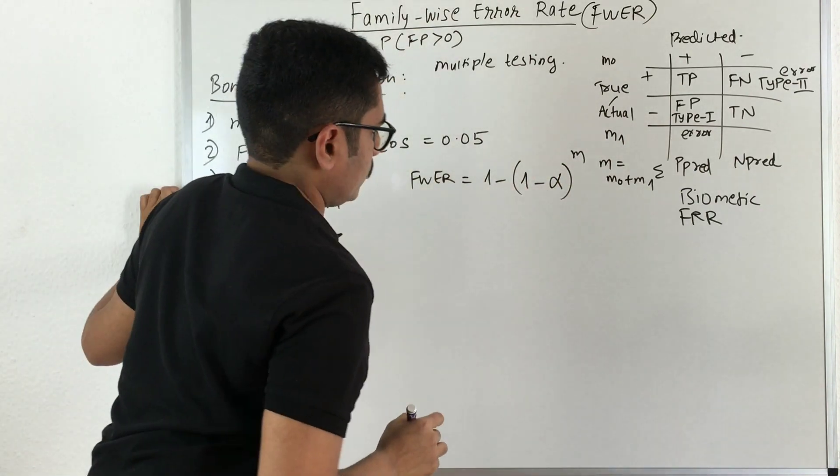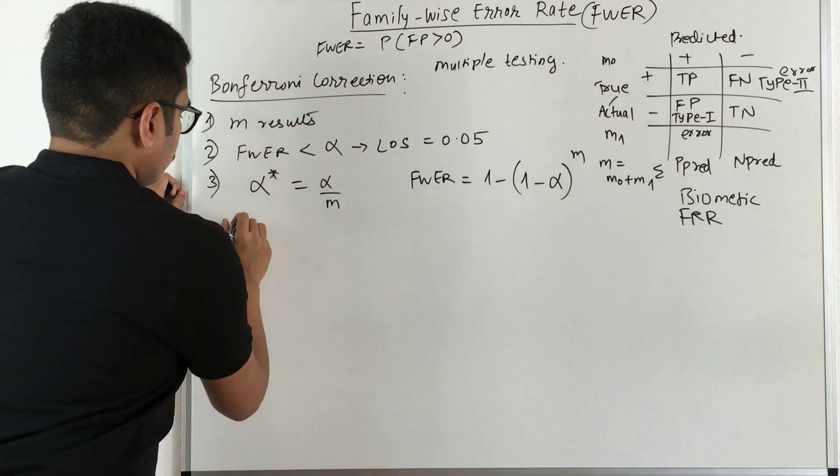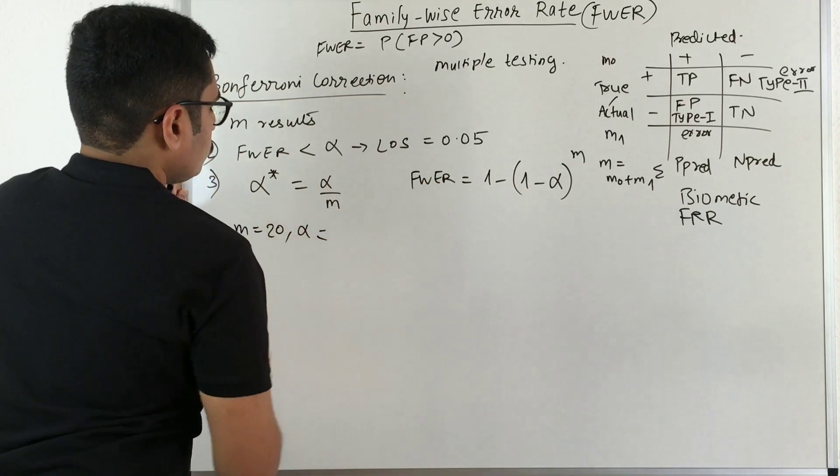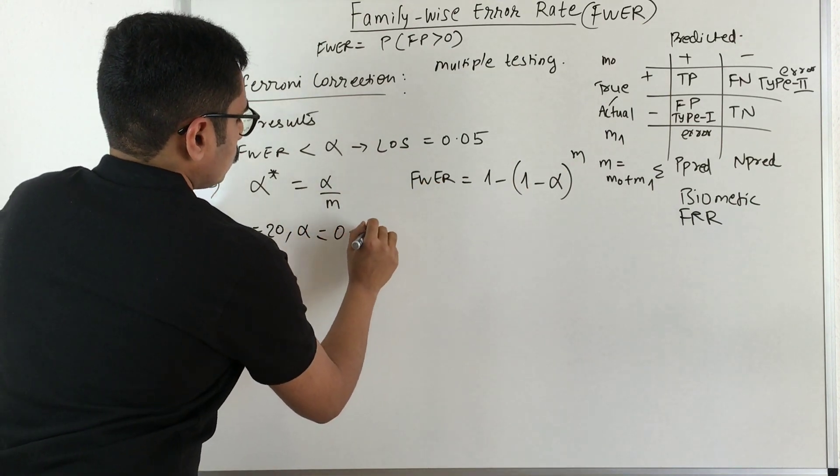So alpha is the level of significance. Now say for example, we have a set of 20 results and we have our alpha value as 0.025.